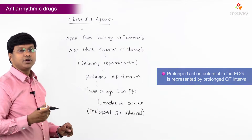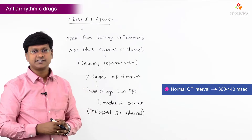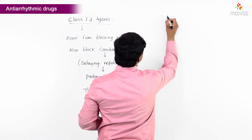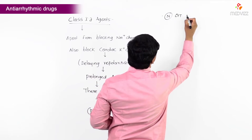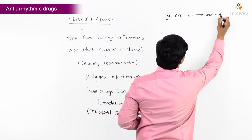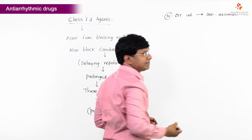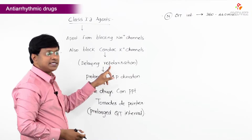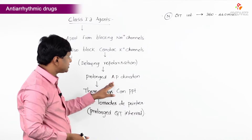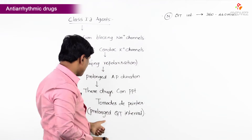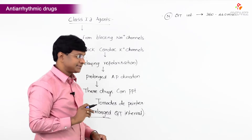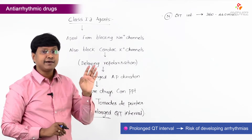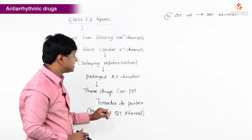The normal QT interval is around 360 to 440 milliseconds, and in some individuals it may extend up to 460 milliseconds. When these drugs block repolarization, the action potential duration increases, and this is represented on the ECG by a prolonged QT interval. Whenever there is a prolonged QT interval, individuals have a risk of developing arrhythmias.